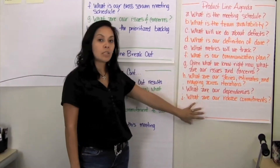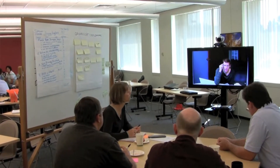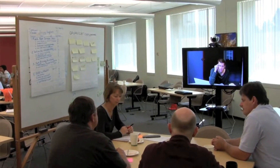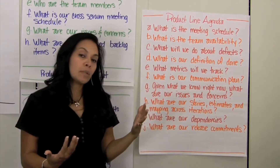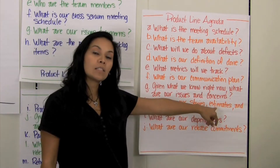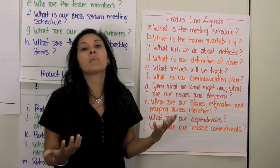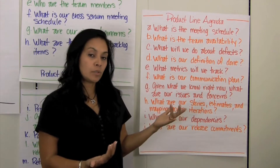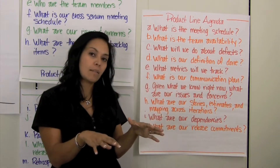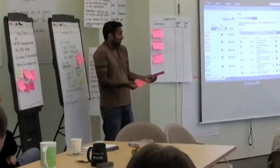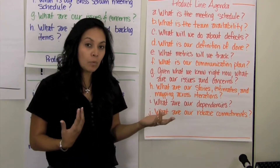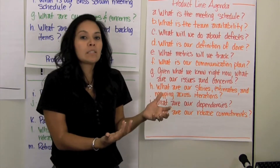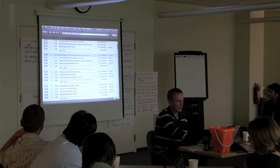At the product line breakout, each team has its own agenda. They discuss their meeting schedule, team availability, how they're going to handle defects, their definition of done, the metrics they're going to track, and the communication plan. Through the backlog grooming session, the team should have already reviewed stories and provided high-level estimates, so they're familiar with their backlog. During release planning, they take stories from the product backlog and move them into the release backlog, then map each story across iterations. We project Rally on the wall and the team collectively maps stories across each iteration.